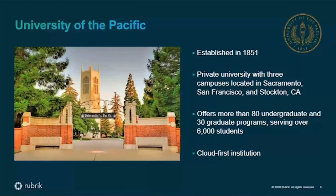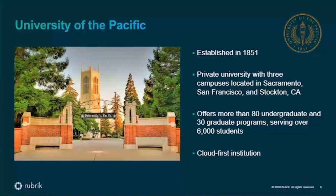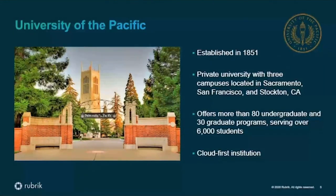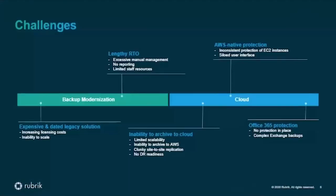We also host staff applications including Canvas, our learning management system, and a complete implementation of Office 365 available to all students, faculty, and staff. We pride ourselves on being a cloud-first institution. When selecting technologies, we look to hosted providers and cloud options first — considering functionality, usability, cost, and ROI — with the overall goal of reducing our on-premise data center footprint. This reduces risk of disruption to university technology services, especially important now with the transition to remote learning. We believe Rubrik has played a critical role in our cloud-first journey.